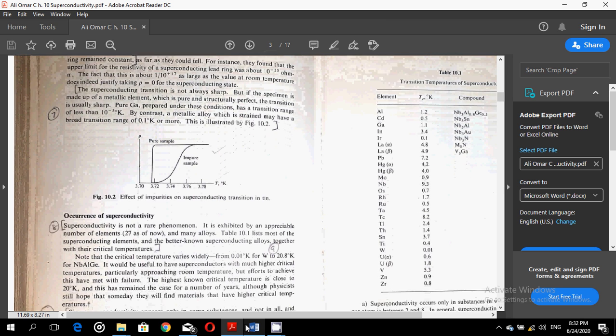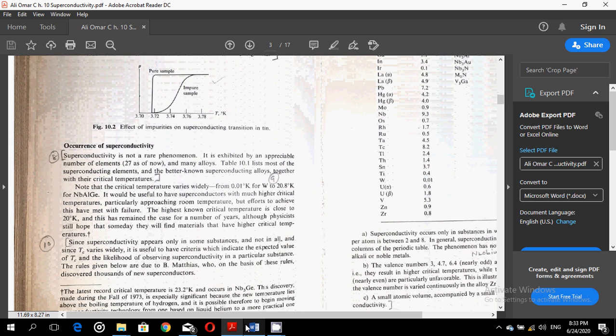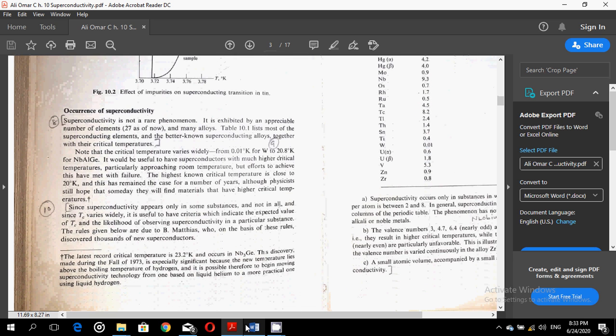Okay, now occurrence of superconductivity. Superconductivity is not a rare phenomenon. It is exhibited by an appreciable number of elements and many alloys. Table 10.1 lists most of the superconducting elements and the better known superconducting alloys together with their critical temperatures.